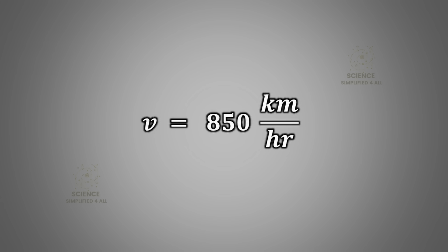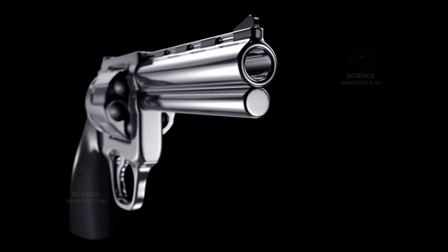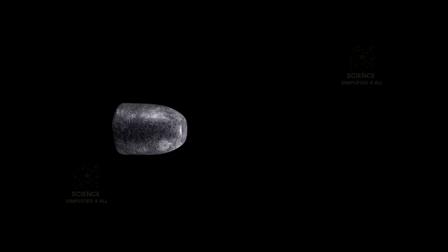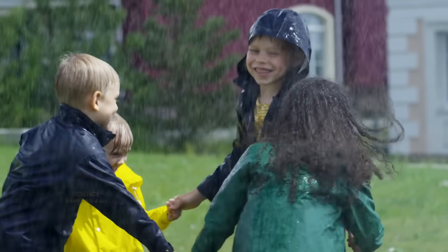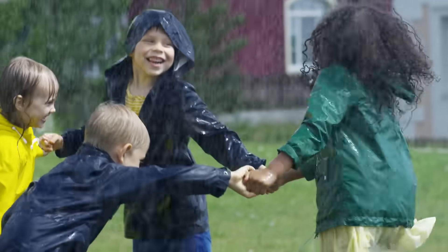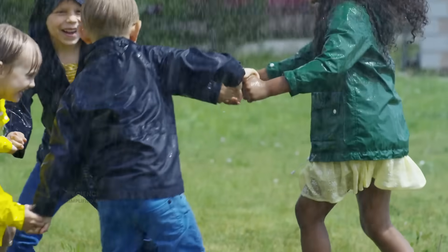So, a raindrop falling from that height should be hitting us at around 850 kilometers per hour, almost the same speed as a bullet fired from a regular gun. Then, why don't these raindrops pierce through our skin? Why don't we even feel a sting?